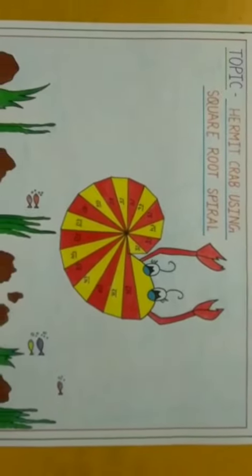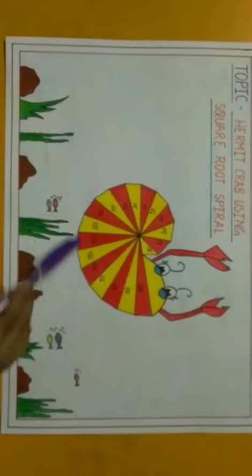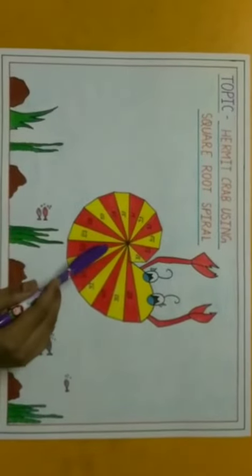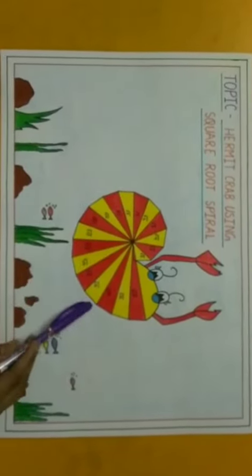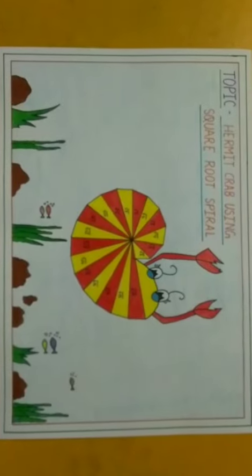With the help of Pythagoras theorem, we find the hypotenuse of all the triangles and join them to form a beautiful square root spiral. Thank you and have a nice day.